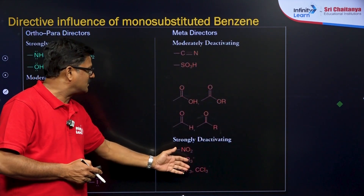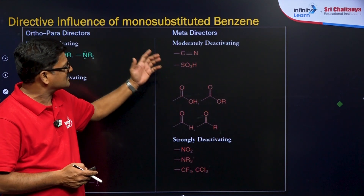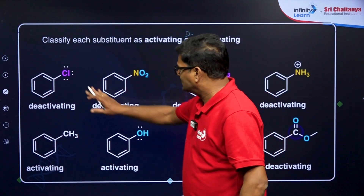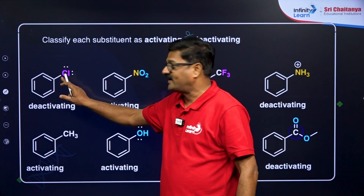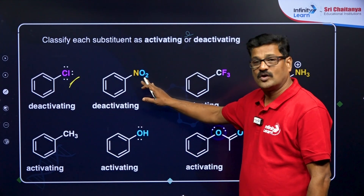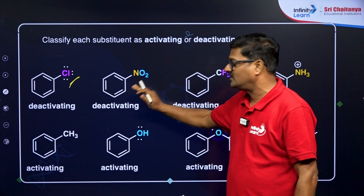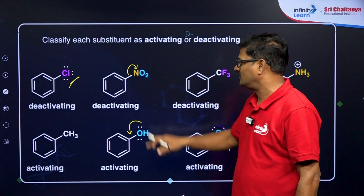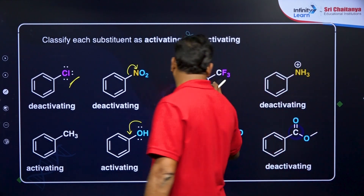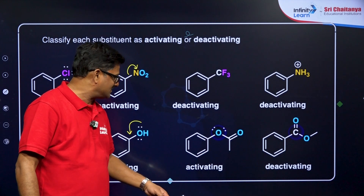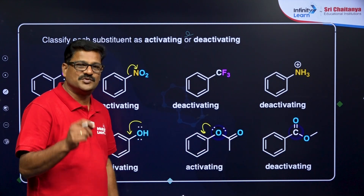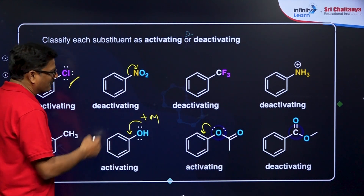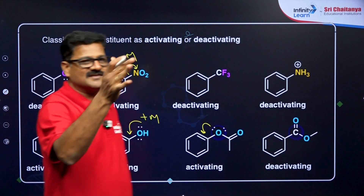Examples of meta-directors include the nitro group, sulfonic group, esters, and cyanides. There is also the exceptional case of deactivating but ortho and para-directing groups. The nitro group has negative mesomeric effect and is deactivating. OH has a positive mesomeric effect and is activating. A simple trick: whenever a lone pair is present on the substituent, it shows positive mesomeric effect; when a pi bond is present, it shows negative mesomeric effect.